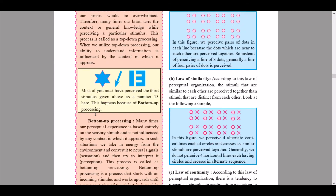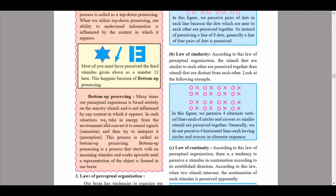For bottom-up processing: most of you must have perceived the third stimulus as the number 13. This happens because of bottom-up processing. Many times our perceptual experience is based entirely on the sensory stimuli and is not influenced by any context. In such situations, we take in energy from the environment and convert it into neural signals through sensation, and then try to interpret it in perception. Bottom-up processing is a process that starts with an incoming stimulus and works upwards until a representation of the object is formed in our brain.